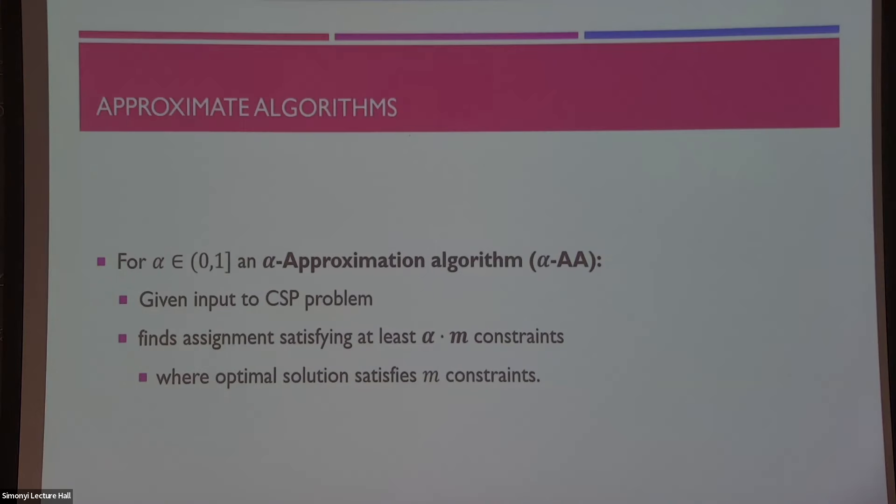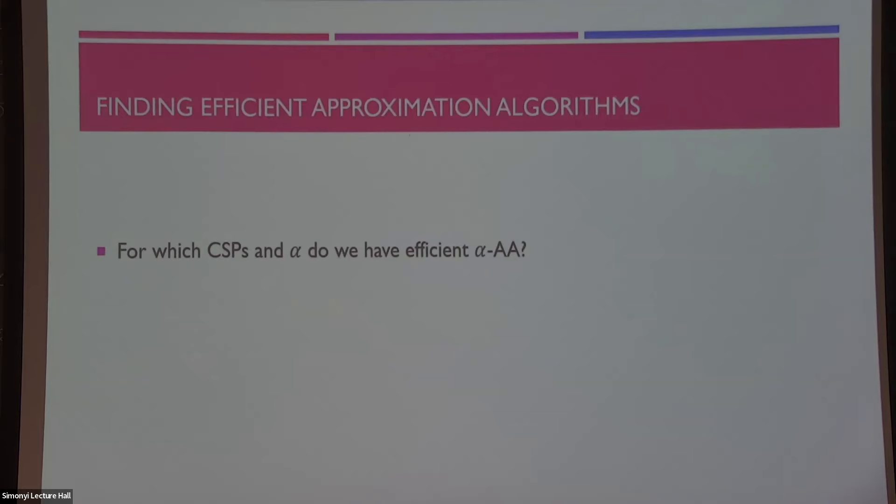So, I think this is a very natural notion, and a slightly more sophisticated version of the question that we asked before is for which CSPs and which constants alpha we have efficient alpha approximation algorithms. Just to give you maybe a taste of a theorem in this field, Håstad told us in 2001 that for the max3SAT problem that I told you about before, there is a very efficient and also very simple 7 over 8 approximation algorithm that's just basically randomly sampling assignments. But for any alpha greater than 7 over 8, in fact, we cannot find an efficient or polynomial time approximation algorithm unless P is equal to NP, which we do not believe.